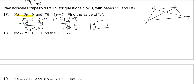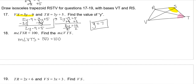Angle TSR is 100 degrees. Find the measure of VTS. Remember, those angles are supplementary. So to find the measure of VTS, you just do 180 minus 100, which is 80 degrees.